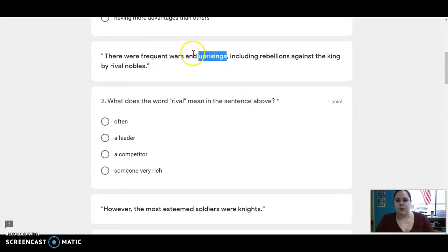Number two, there were frequent wars and uprisings, including rebellions against the king by rival nobles. What does the word rival mean in the sentence above?